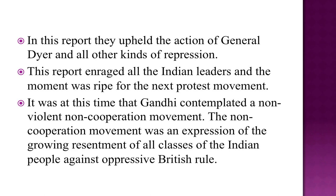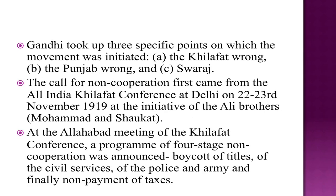It was at this time that Gandhi contemplated a non-violent, non-cooperation movement. The non-cooperation movement was an expression of the growing resentment of all classes of the Indian people against oppressive British rule. Gandhi took up three specific points on which the movement was initiated: one, the Khilafat wrong done against Turkey; two, the Punjab wrong, that is the firing at the Jallianwala Bagh; and three, Swaraj. The call for non-cooperation first came from the All India Khilafat Conference at Delhi on 22-23 November 1919, at the initiative of the Ali brothers.